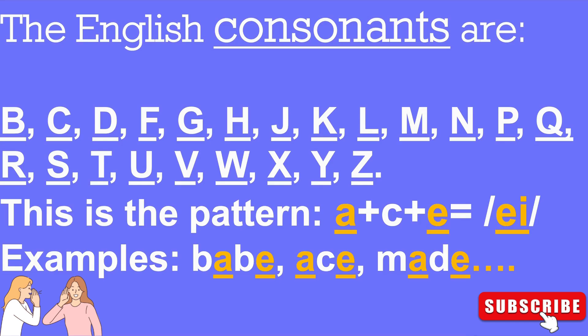I didn't pronounce the letter U because it's a vowel. Okay, it's a printing mistake. This is the pattern: if we have in a word the letter A plus consonant plus E, it gives us the sound A.